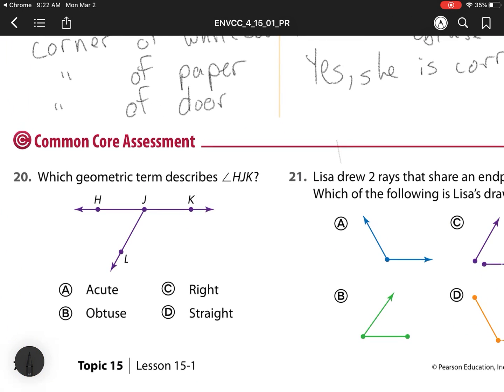On to number 20. Which term describes H, J, K, all the way across? That is a straight angle because it's straight.